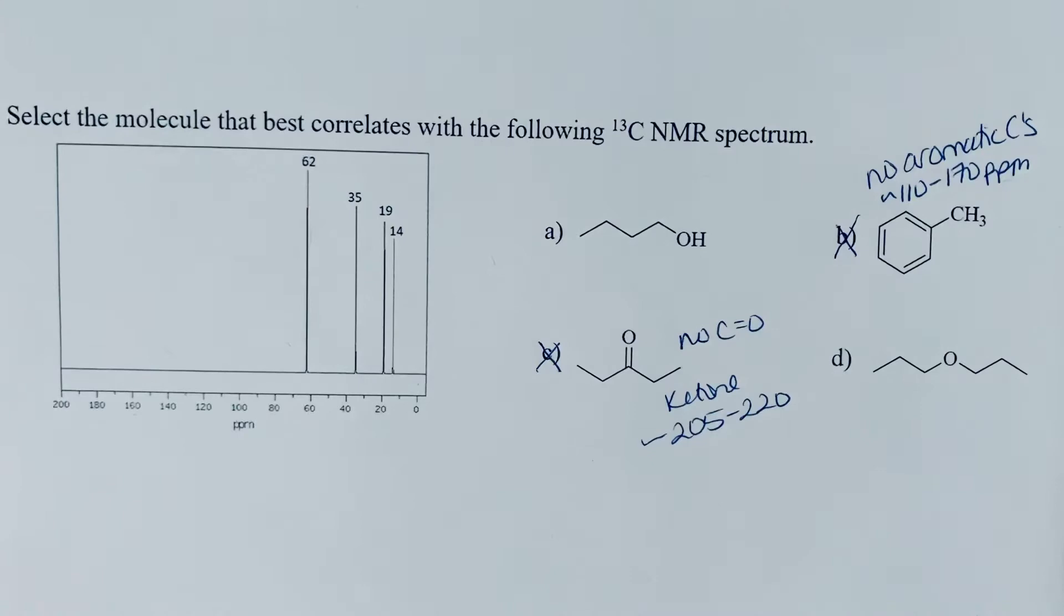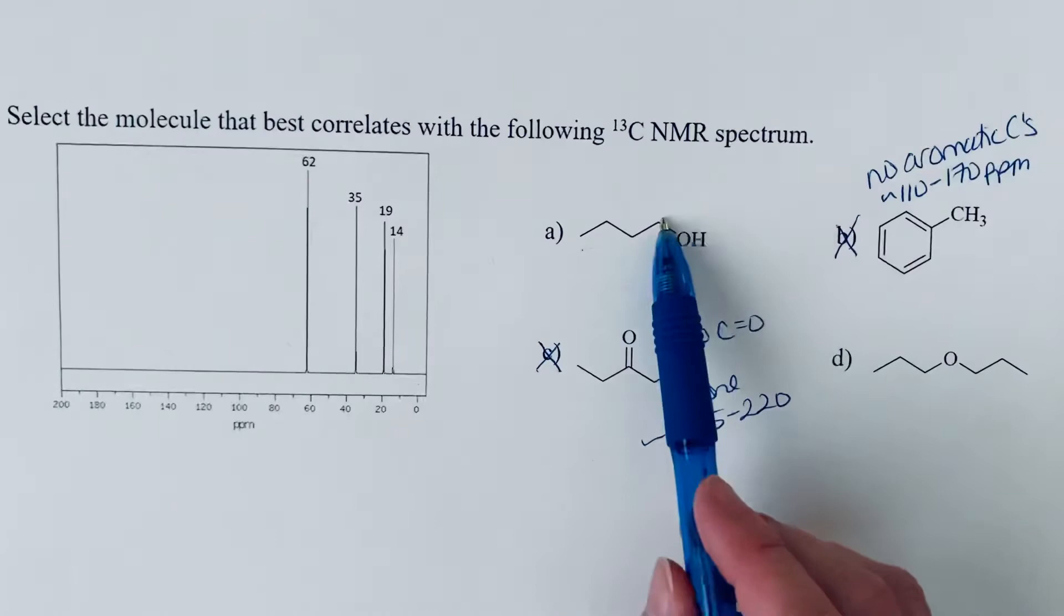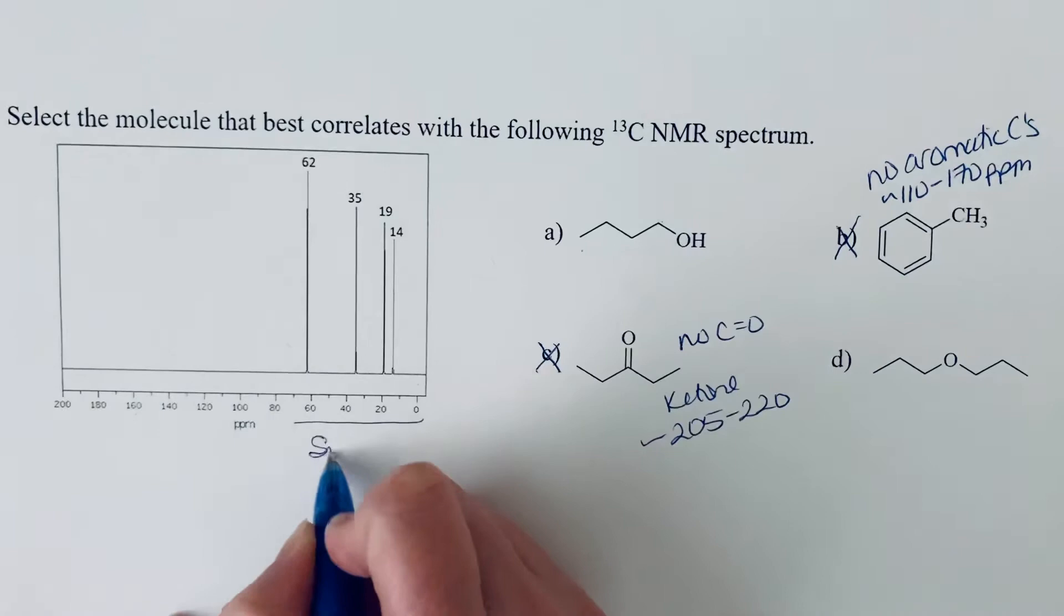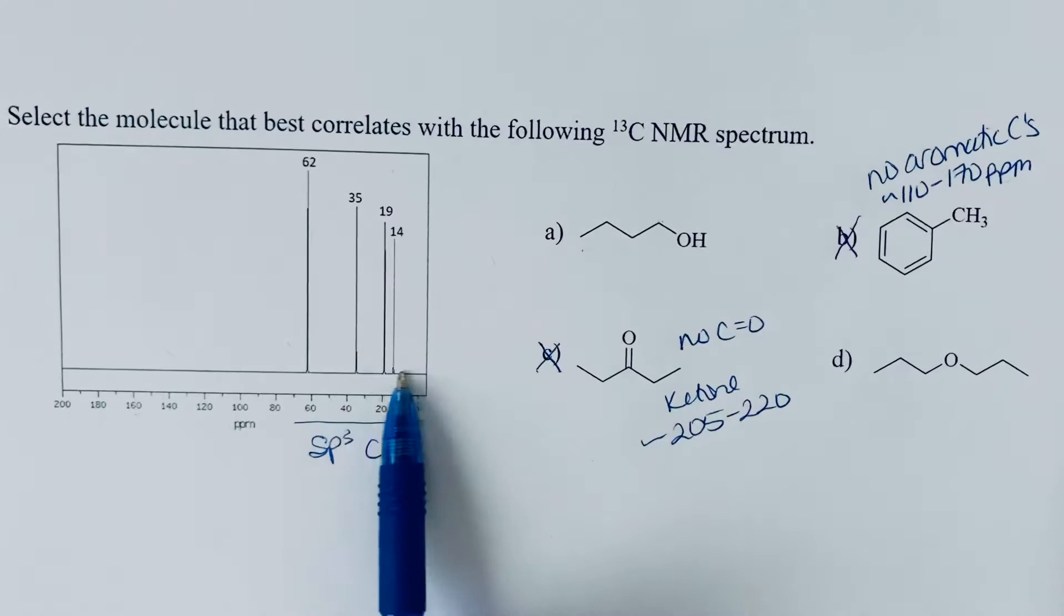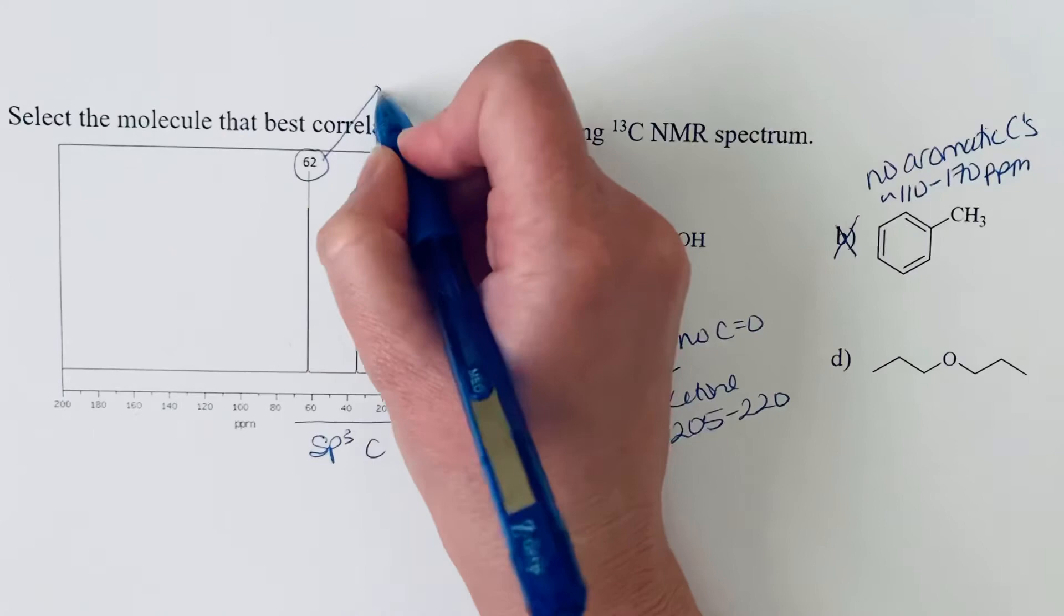So to look between options A and D, they're kind of similar in the types of carbons that they have. You've got sp3 hybridized carbons. And that sp3 range is always down here. This is your range for sp3 carbons. It's down on this part of the spectrum. So your alkane carbons are usually lower. They're more shielded.